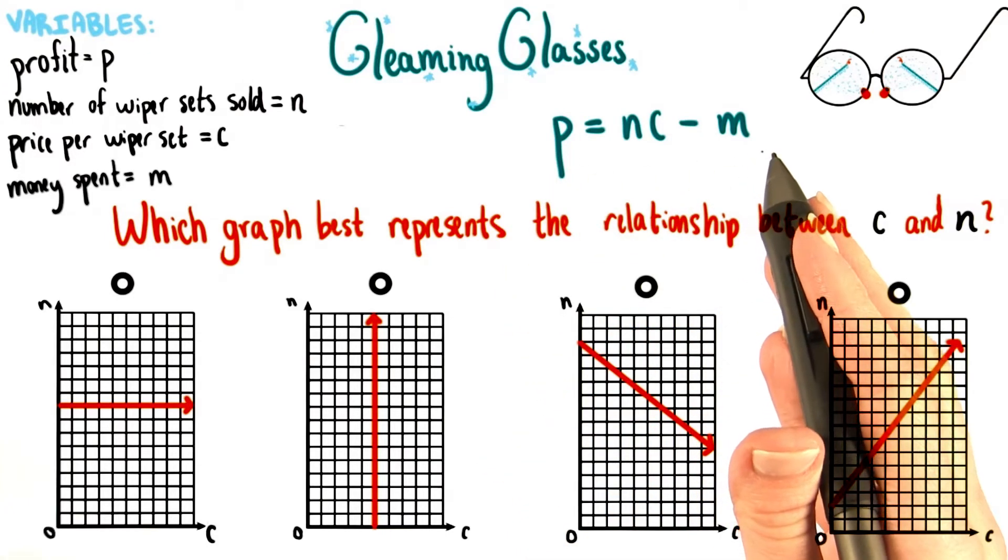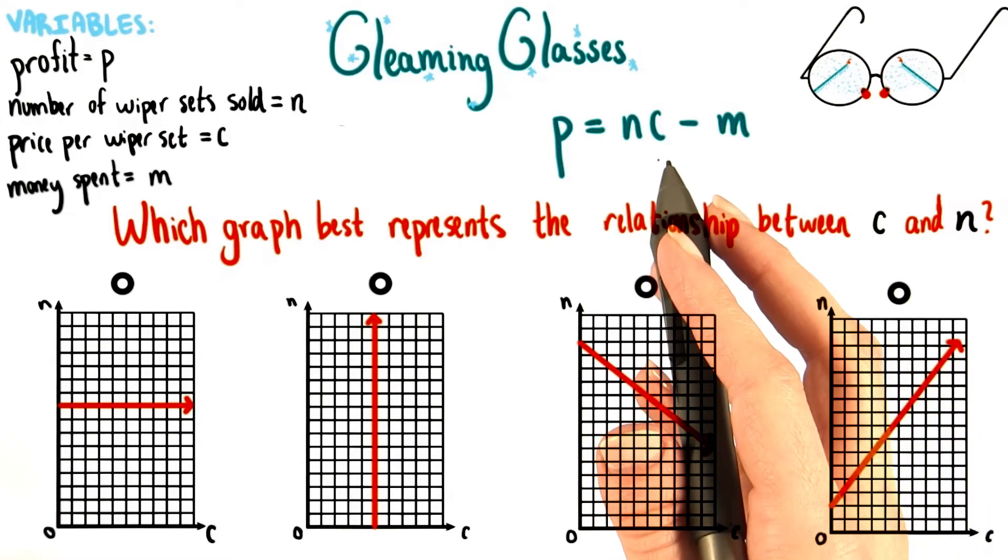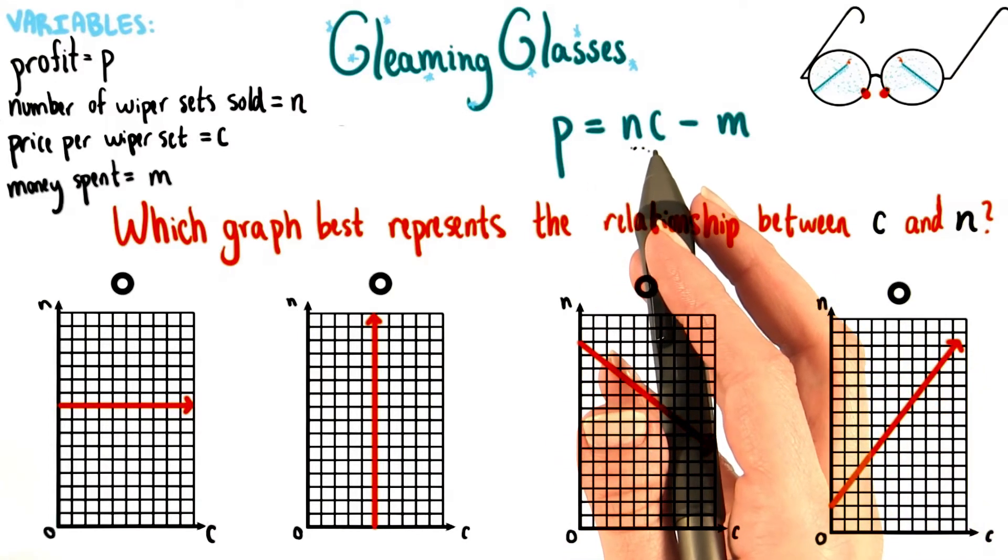This equation that we just developed is a great start. But one thing that Grant learned from a businessman at the expo is that the price of an item actually affects the number of it that you can sell. So in this case, that would mean that n actually depends on c.